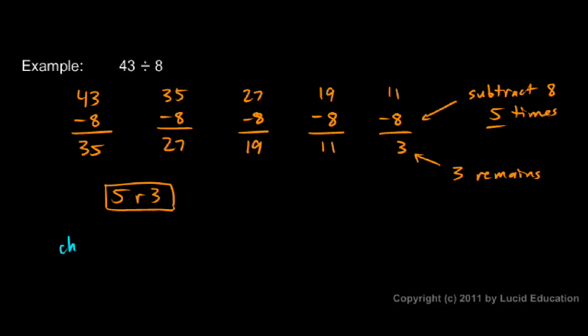And then here's the check. I have to do my 5 times my 8. 5 times 8 is 40. And then I add back in the remainder of 3. And 40 plus 3 is obviously 43. And that's my original number right there. So it checks out. The problem was done correctly.